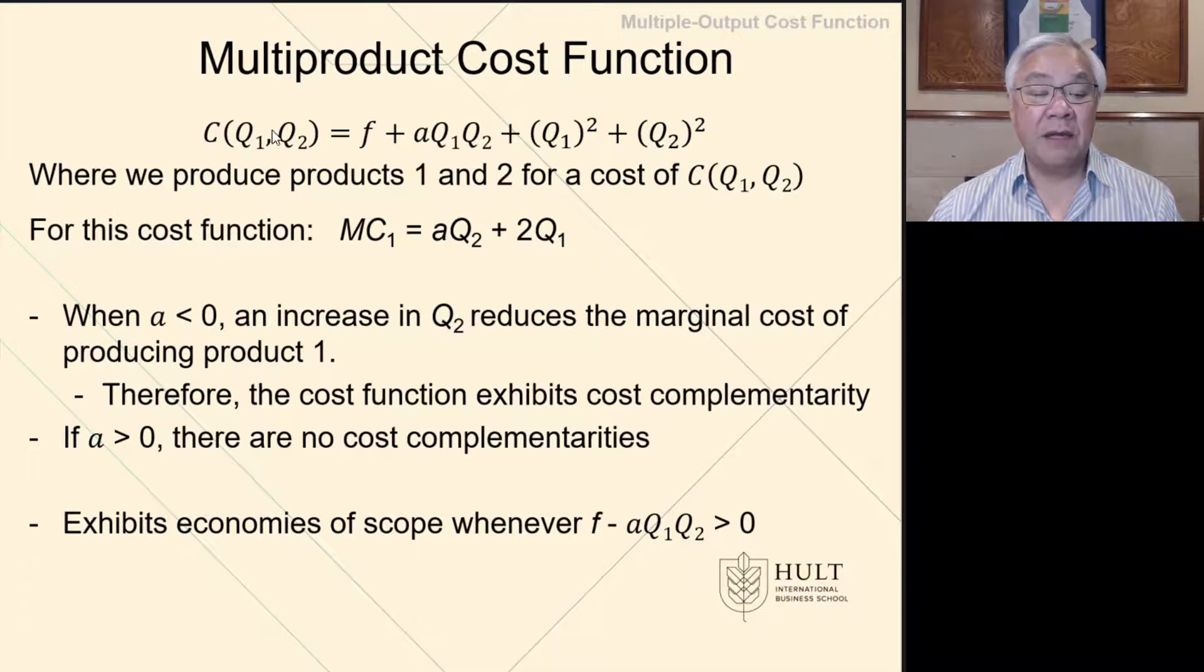So here, if we look at this two-product cost function, the marginal cost with respect to product 1 is AQ2 plus 2Q1.